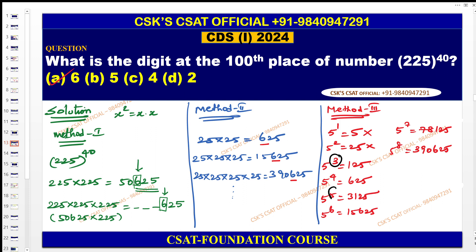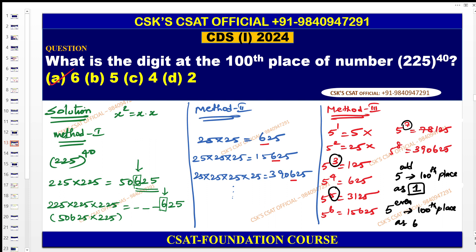5⁸ has 6 in the hundreds place. Notice the pattern: for even powers of 5, the hundreds digit is 6; for odd powers, the hundreds digit is 1. Since the power here is 40, which is even, the hundreds place is 6. If the power were odd (41, 43, etc.), the hundreds digit would be 1. Method 3 plays a very vital role.